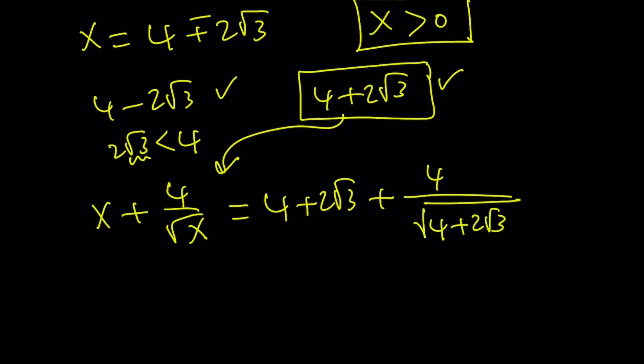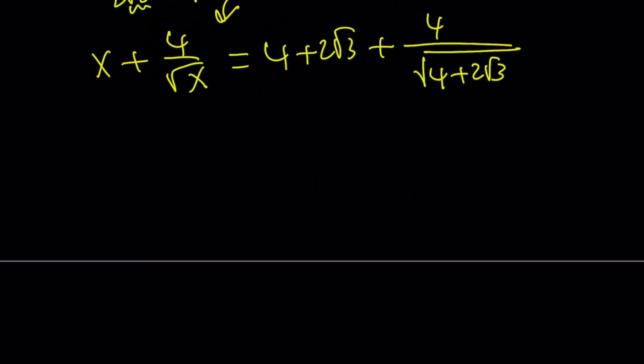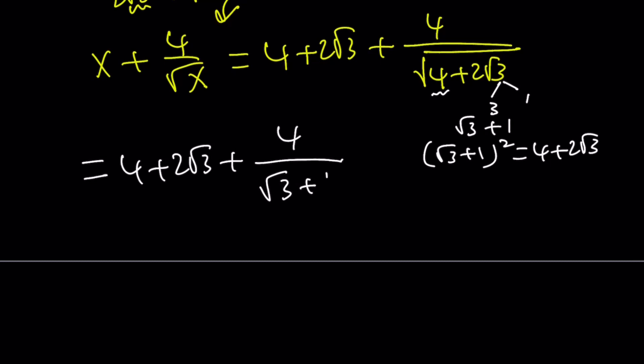Now, you have to take the square root of 4 plus 2 root 3. That's not too hard, especially if you know that you can find two numbers whose product is 3 and whose sum is 4, and those numbers are 3 and 1. So this can be easily written as the square root of 3 plus 1. Now, why does that happen? Because if you square root 3 plus 1, you get 4 plus 2 root 3. So this becomes 4 plus 2 root 3 plus 4 divided by square root of 3 plus 1, which is the square root of 4 plus 2 root 3.